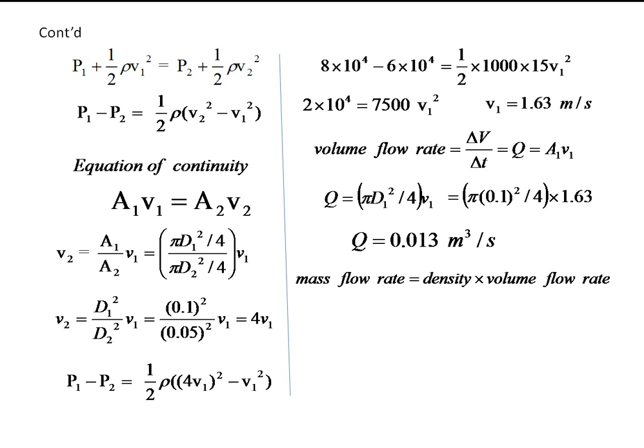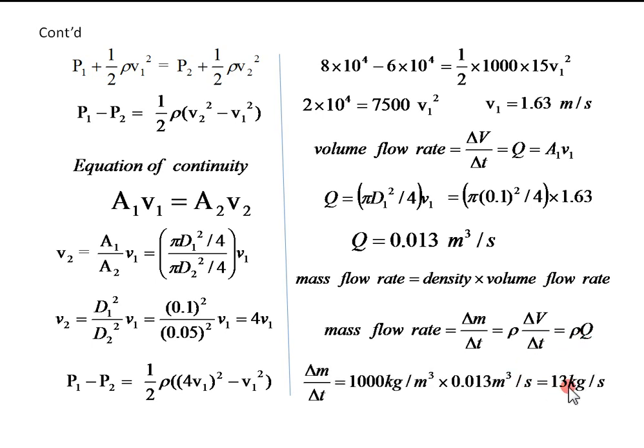If you want to calculate the mass flow rate, you just multiply the density by the volume flow rate. Density times volume flow rate will give us 13 kilograms per second.